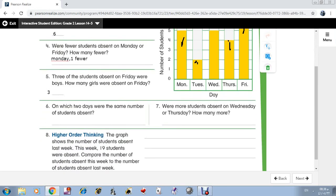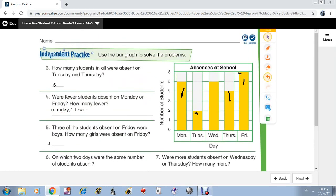Number 6: On which two days were the same number of students absent? The same number were? Yes, here. Monday and Wednesday. Great. So the answer is Monday.